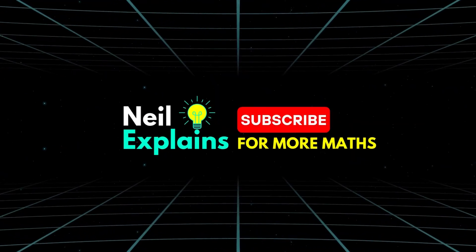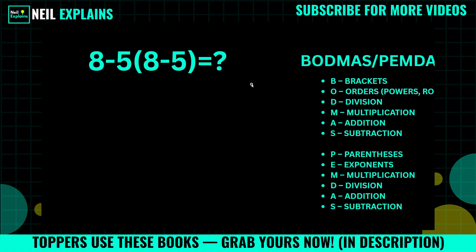Hey, what's up everyone! You are watching Neil Explains. Today's problem is a bit of a brain teaser, but we will solve it the easiest way—step by step method. If you think 8 minus 5 is 3, and 8 minus 5 is 3, both multiply and it will become 6, then this is the wrong method.